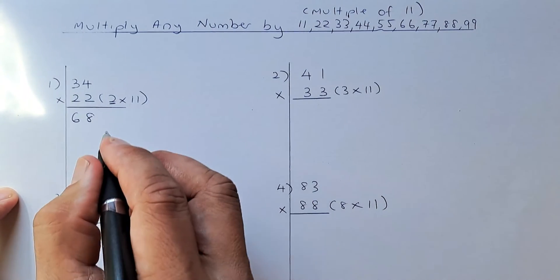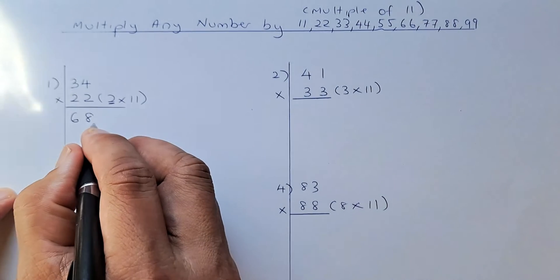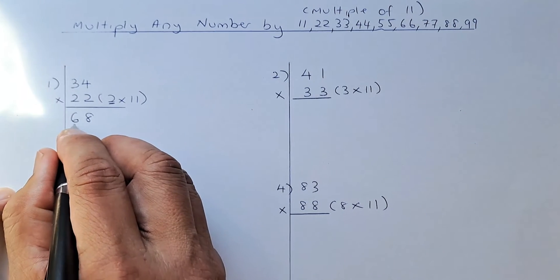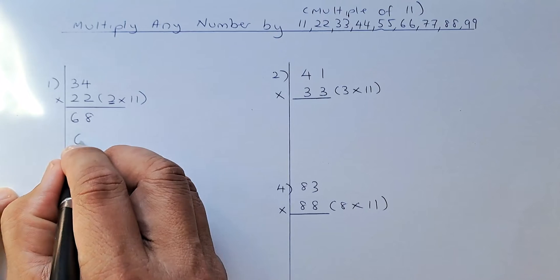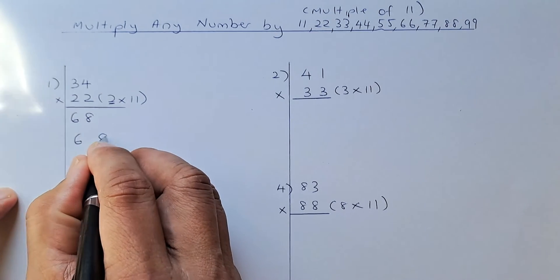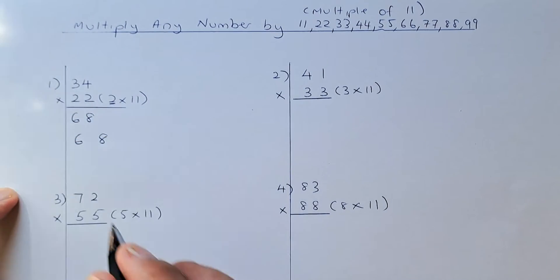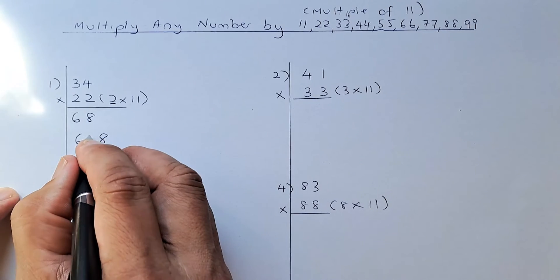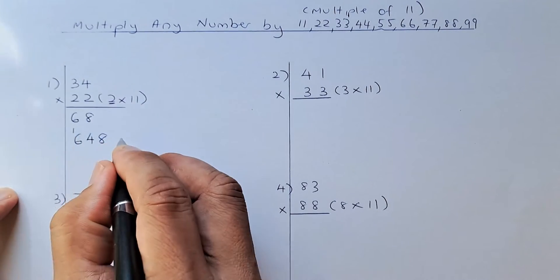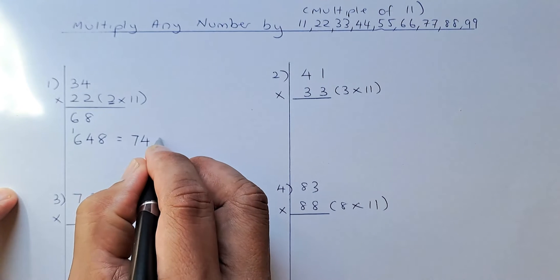You take 4 by 2 is going to be 8 and then 3 by 2 is going to be 6. To multiply by 11, what you do, you need to do the step that we have done before. So 6 and 8 remain. And then we're going to add the two numbers in between. So 6 plus 8 is 14. So 4 carry up 1. And the answer is going to be 748.